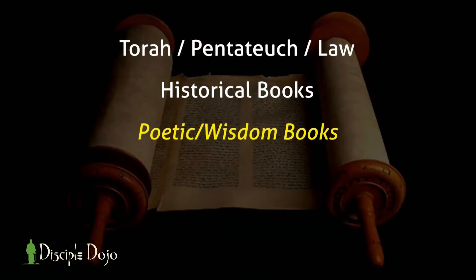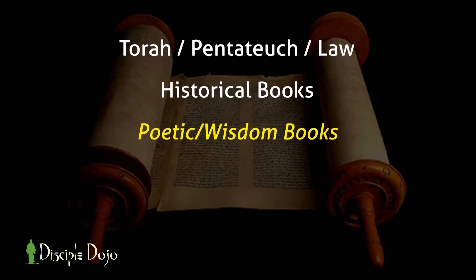Then we come to the poetic or wisdom books — Job, Psalms, Proverbs, Ecclesiastes, Song of Songs. These are poetry, songs — they don't tell narratives. They're grouped under the genre of wisdom literature. These were writings to be read and studied to make Israel wise. Wisdom doesn't mean you know a lot; it means you know how to act in situations — how to be obedient, how to live as a faithful covenant Jew in whatever life throws at you. The ups and the downs — that's wisdom literature.